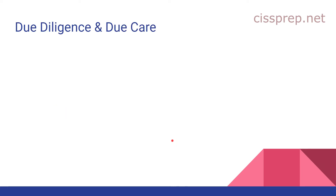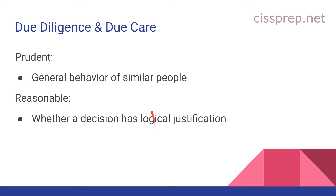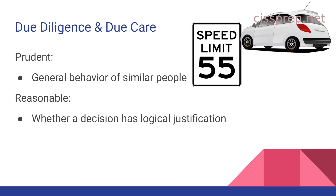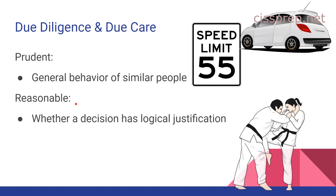Moving on to some new topics related to due diligence and due care — we have prudent and reasonable actions. A prudent action is basically what most people in a similar life circumstance would do. For example, the speed limit is 55 but in a court of law you might be able to argue that most prudent people are usually within 5 to 10 miles over or under the speed limit. Reasonable actions are decisions that have logical justification — for example, breaking someone's rib during a karate class is probably reasonably justified, but doing that to a random person on the street probably won't hold up in court.